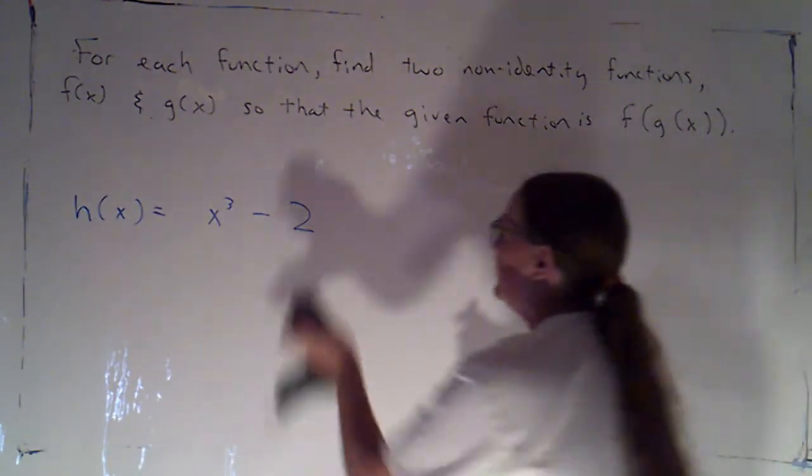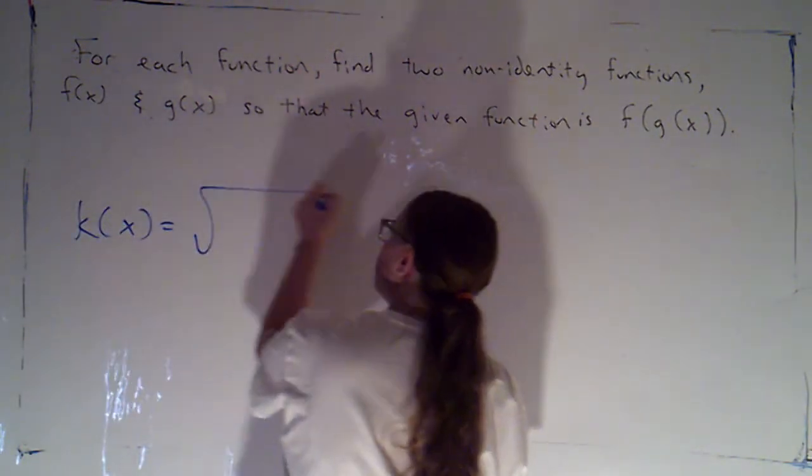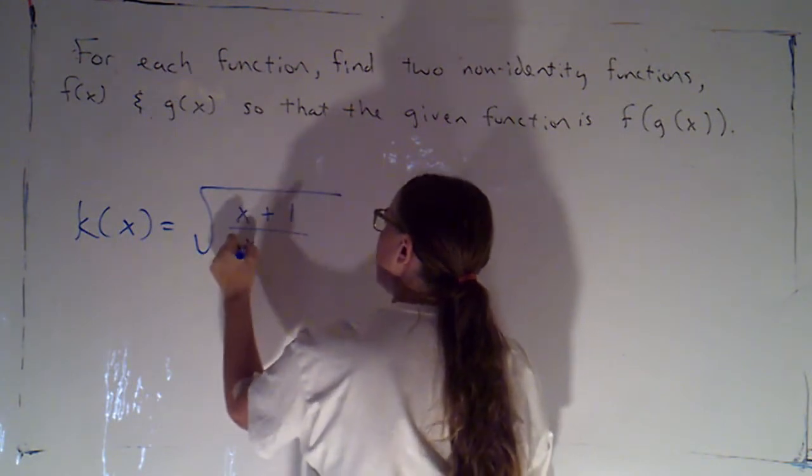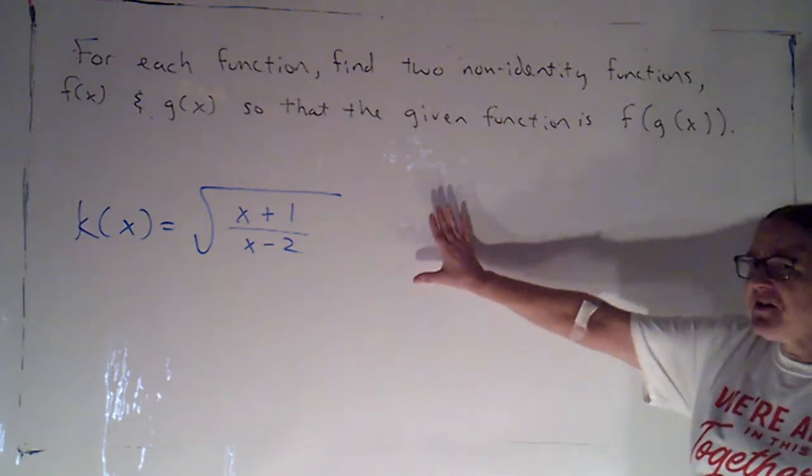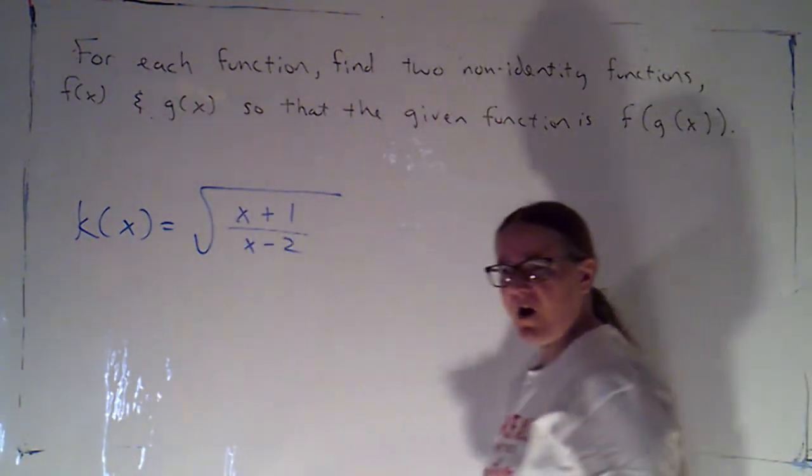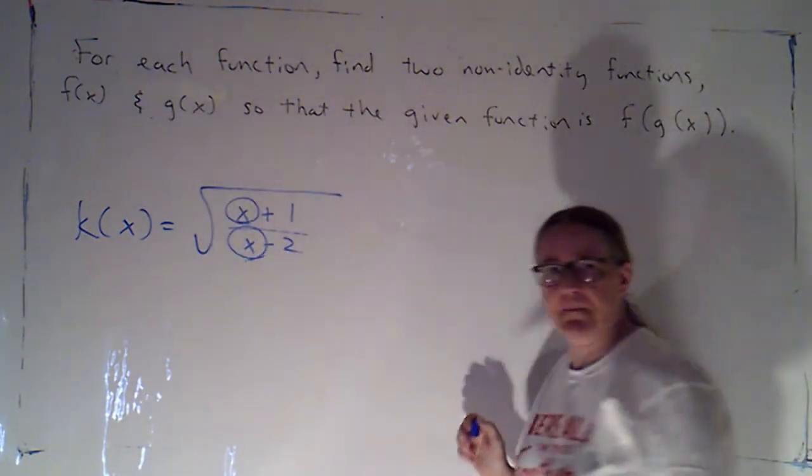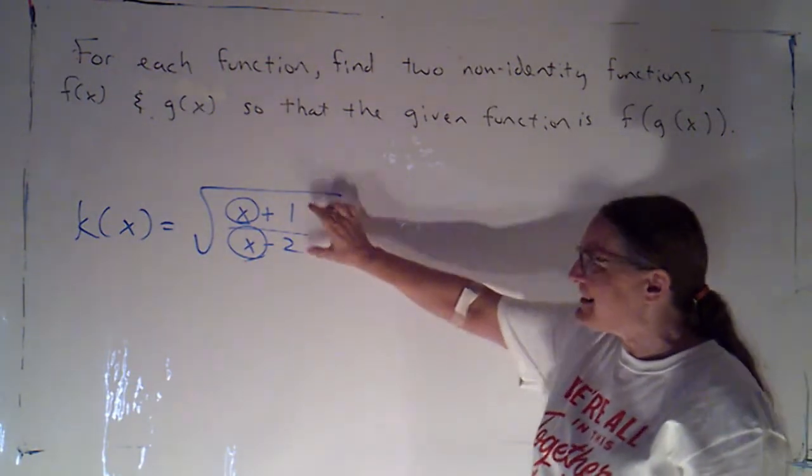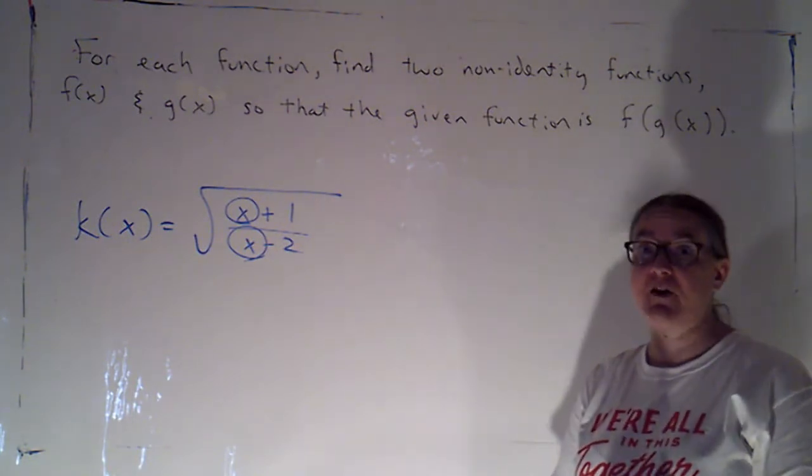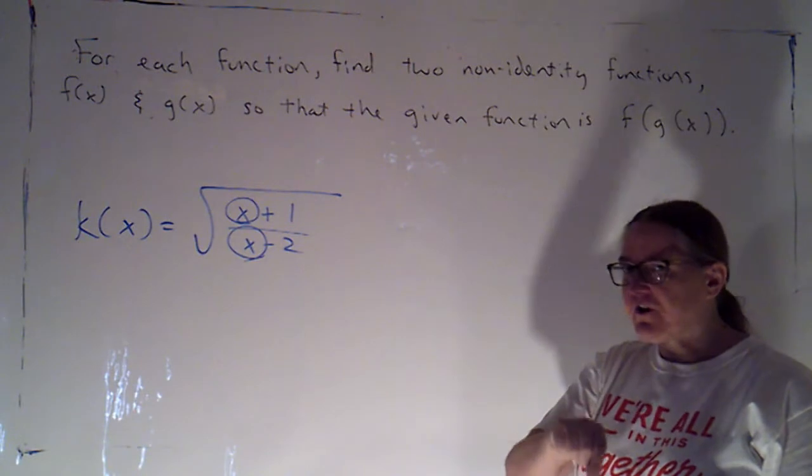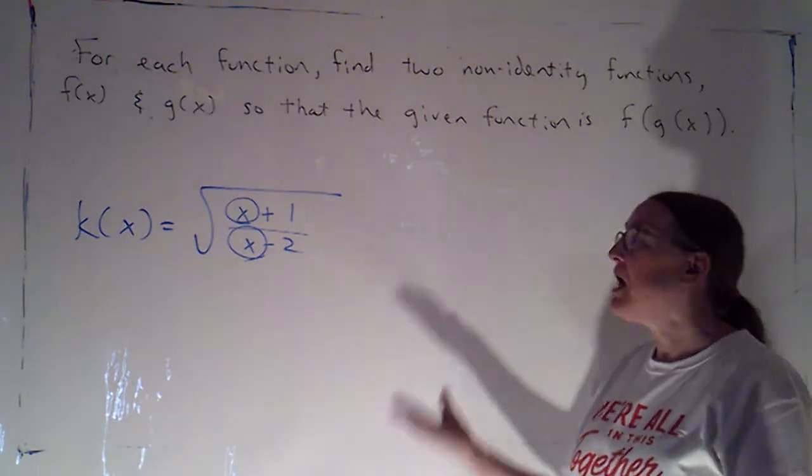Let's try another example. Same directions. Let's try k of x equals the square root of x plus 1 over x minus 2. That looks kind of complicated because I've got this fraction going on here. But one thing that I want to point out is that I probably want this entire fraction to be part of the same function. Because once I do whatever the first function does, I'm changing my input. So, I start with an x, I do some stuff to x.